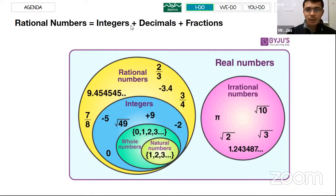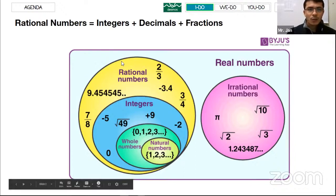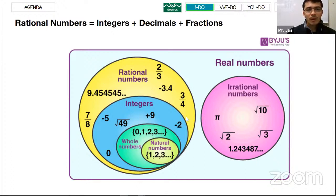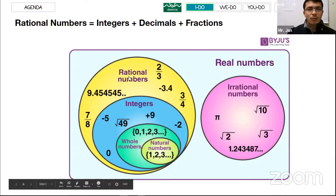This is a Venn diagram. This yellow circle — whatever is inside of it, we call rational numbers, including the blue circle and both green ones. We've talked about all of these rational numbers until today.